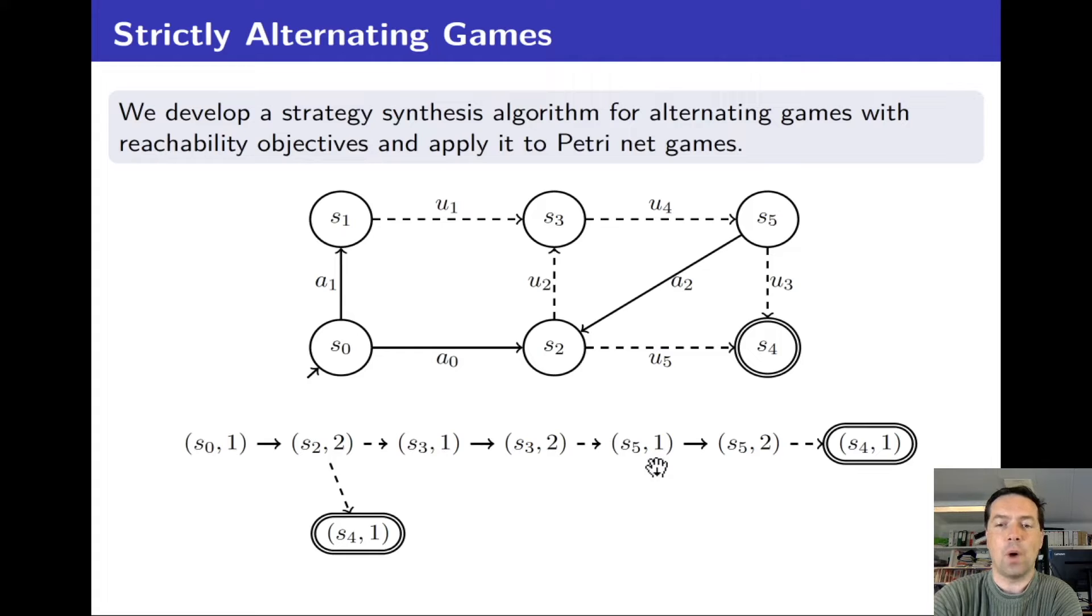Now player 1 can decide to idle again and not take the a2 transition and give turn to player 2. Player 2 does not have this possibility; when it has an enabled transition it has to take it, and that will bring us to state s4 that is winning for player 1.